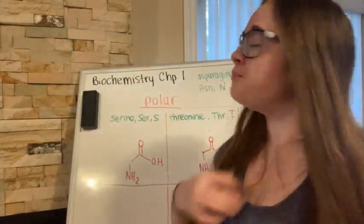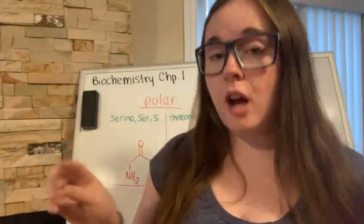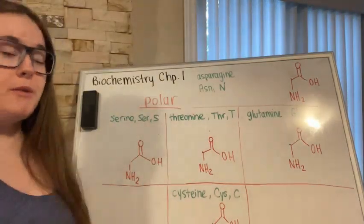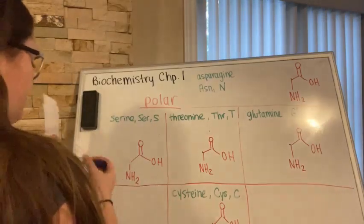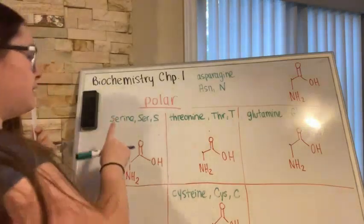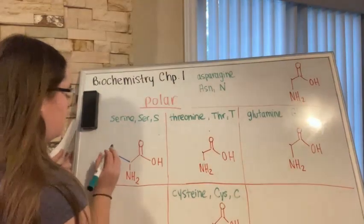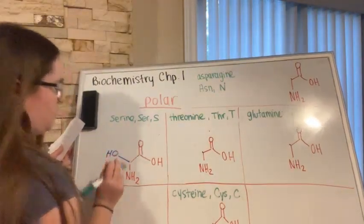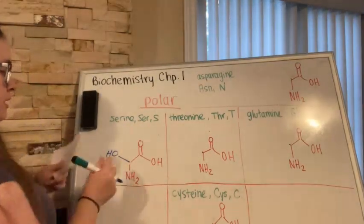Welcome back. Now we're going to go through our polar amino acids. Their side chains are what make them polar. The first polar amino acid is serine — S-E-R, one-letter abbreviation S. Serine just has an OH group as its side chain, and that OH group is what makes it polar.